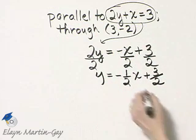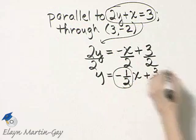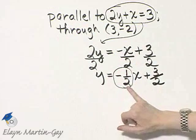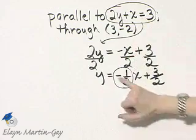Remember, when an equation is solved for y, the coefficient of x is its graph's slope. So the slope of this line is negative 1 half.